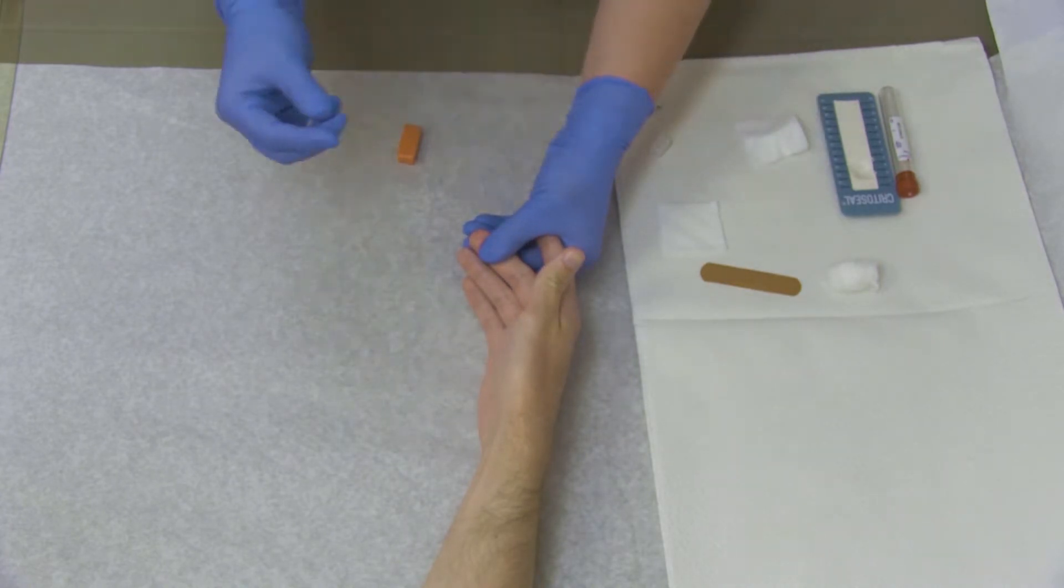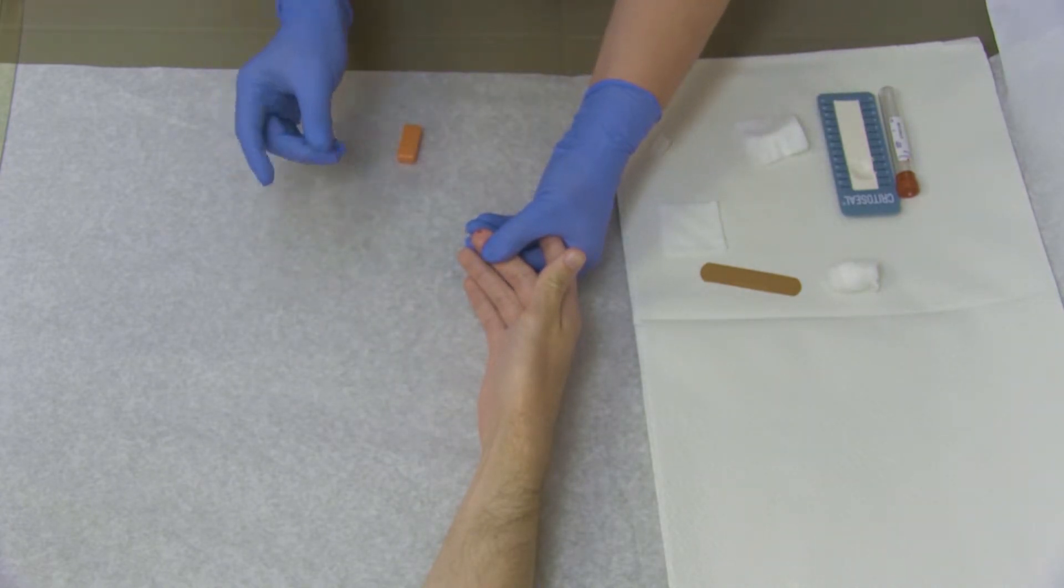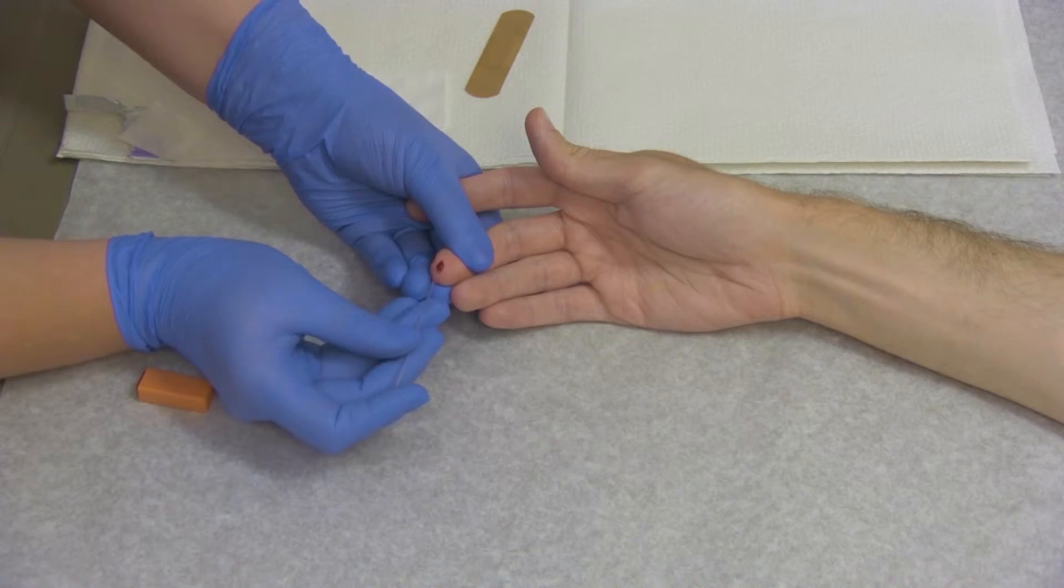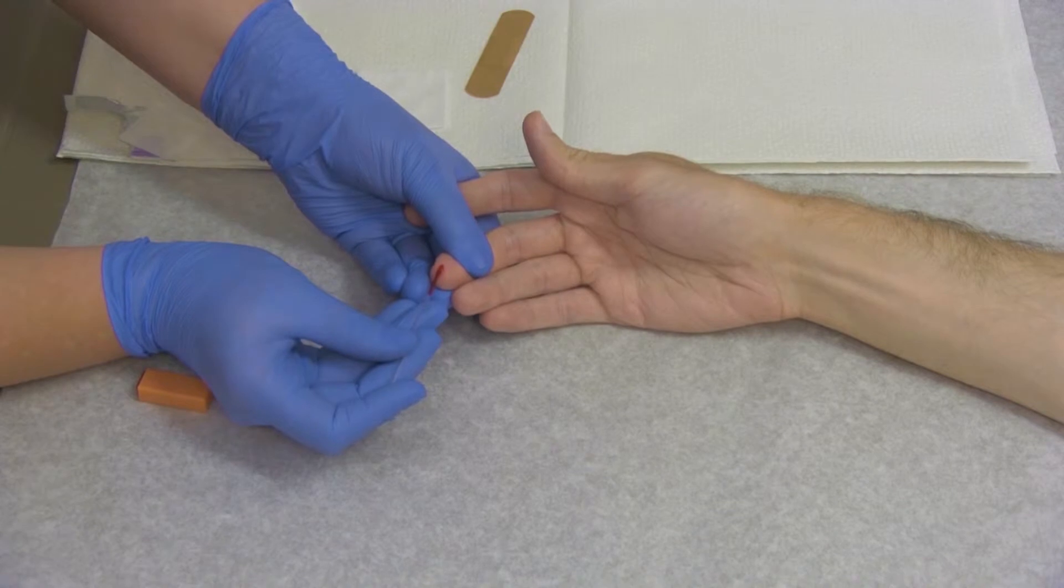Allow a well-rounded second drop of blood to form at the puncture site. Holding the capillary tube at a horizontal angle, gently touch the end of it to the drop of blood on the finger. The tube will fill by capillary action.